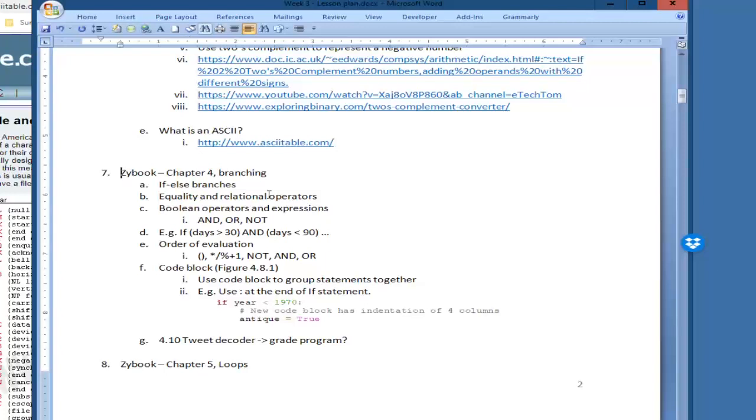Zybook chapter 4 is about branching. If you go there, it'll talk about if statements. If this variable here is less than 1970, then do something. If not, then it'll do something else. It's a conditional statement that allows you to branch into other parts of the code. That's very useful.